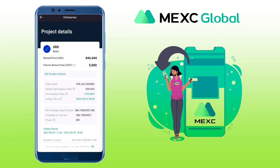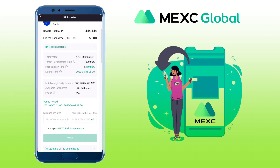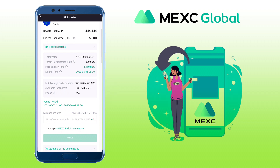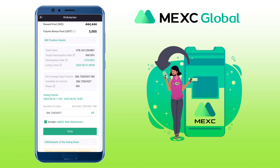Here you will see the total votes and the participation rate as of the moment. Here you will also see your available MX tokens that you can use to cast your vote. Let me use all my MX tokens. You just input the amount of MX tokens here, and once decided, you click on Vote.